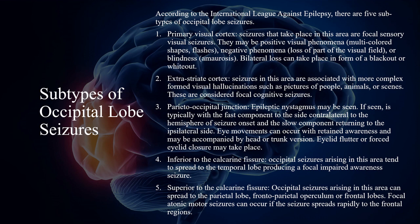The third subtype is the parietal occipital junction. Epileptic nystagmus may be seen, typically with the fast component to the side contralateral to the hemisphere of seizure onset, and the slow component returning to the ipsilateral side. Eye movements can occur with retained awareness and may be accompanied by head or trunk version. Eyelid flutter or forced eyelid closure may also take place.